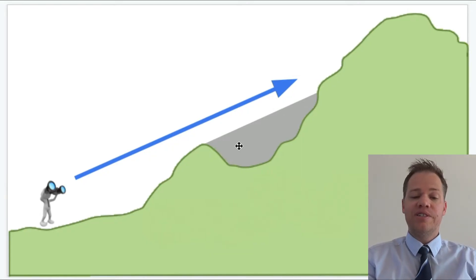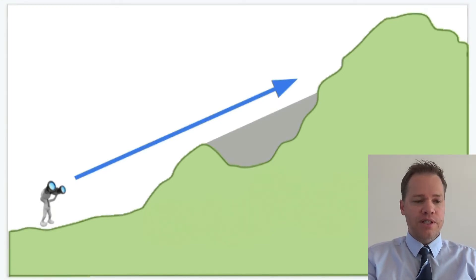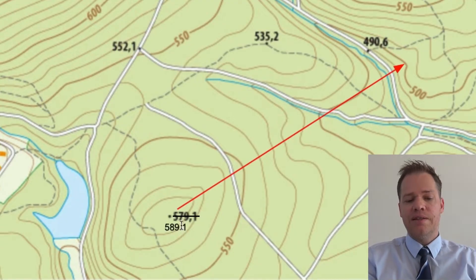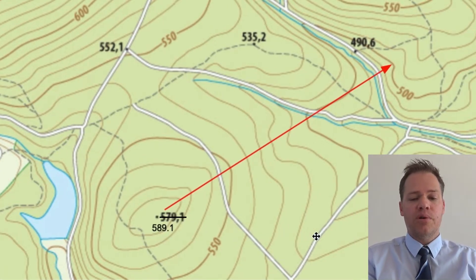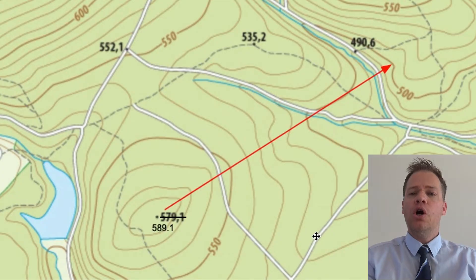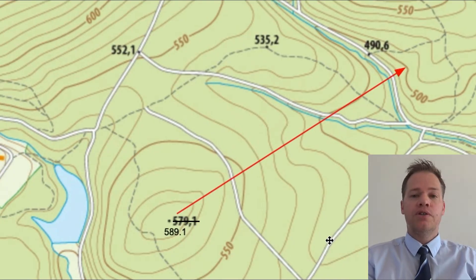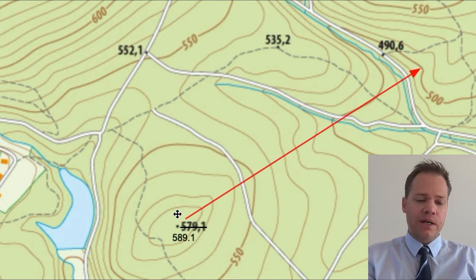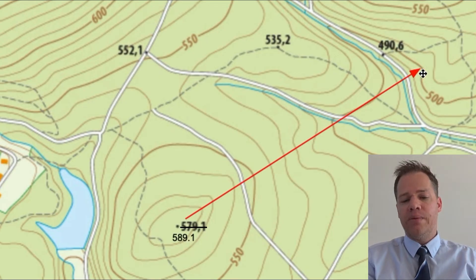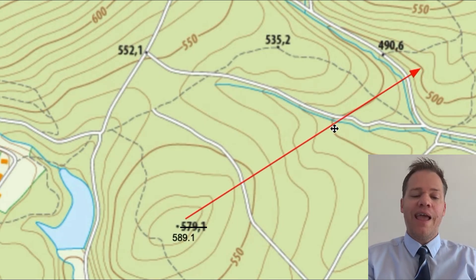So how do we determine intervisibility if we use a topographic map or a contour map? I just had to correct something — it says 579.1 but it's actually 589. Now in order to interpret topographic maps and contour maps, there's some background information that we need. I've posted a few videos on how to read topographic maps and features on these maps, so you can click the links below in the description if you need more background knowledge. Here we have a point that's 589.1 meters above sea level, and point B is 500 meters above sea level. We need to determine whether there's anything blocking the view.